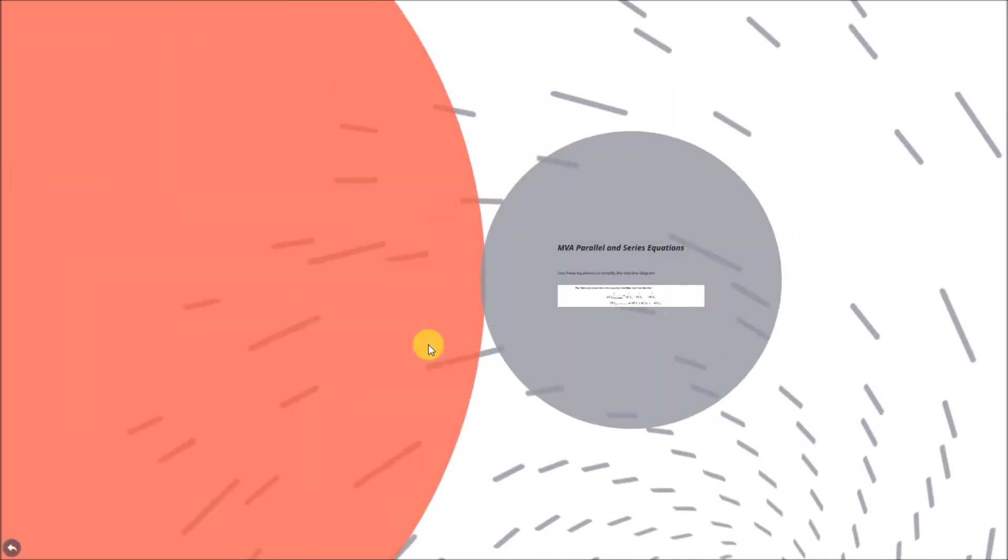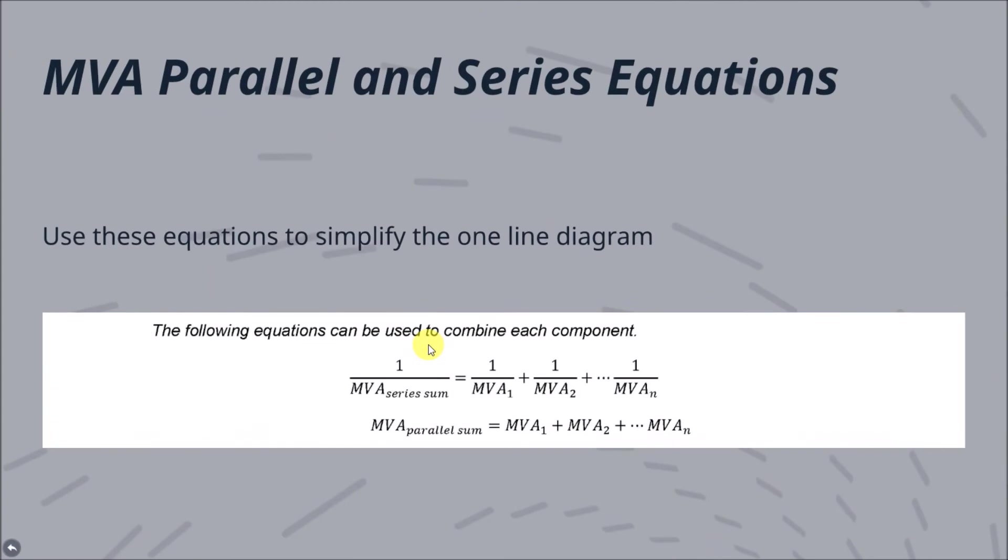The previous calculations will result in the following short-circuit MVA values as shown in this figure. The next step is to combine each of these MVA values with the equations for combining components in parallel and series on the next slide.